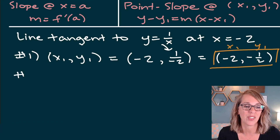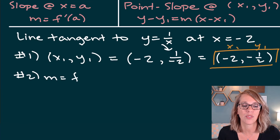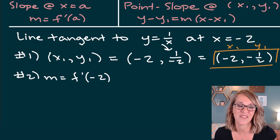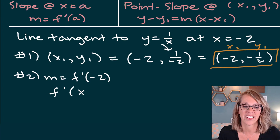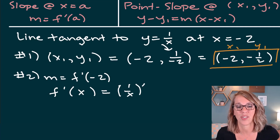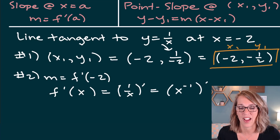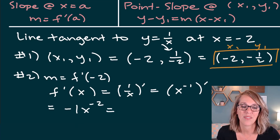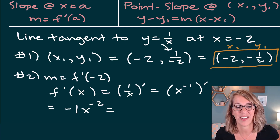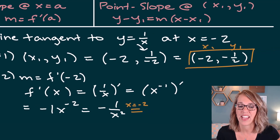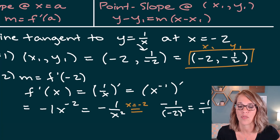Step two, find the slope. I need the derivative of 1/x. Rewriting as x⁻¹ and applying the power rule: f'(x) = −1·x⁻² = −1/x². Evaluating at x = −2: f'(−2) = −1/(−2)² = −1/4. So the slope m = −1/4.